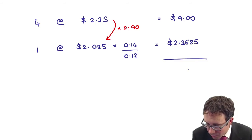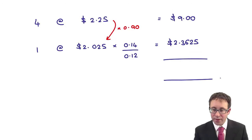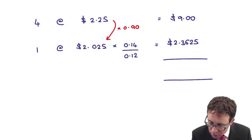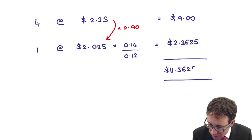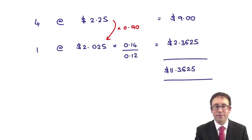If you tap that into your calculator, 0.14 divided by 0.12 times 2.025 gives me $2.3625. Again, in the exam, I wouldn't be so accurate in terms of the rounding.